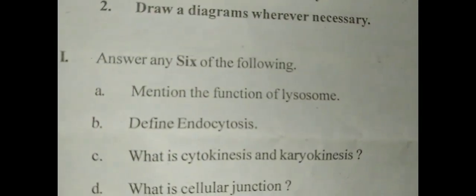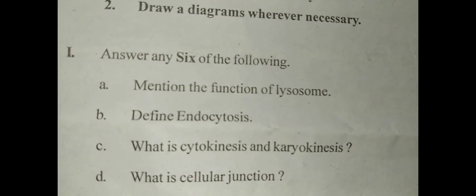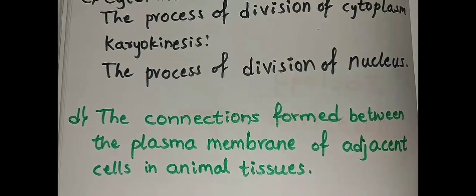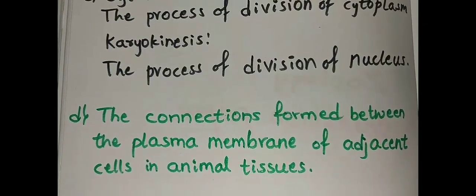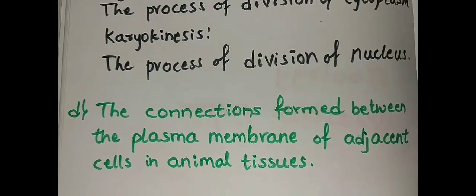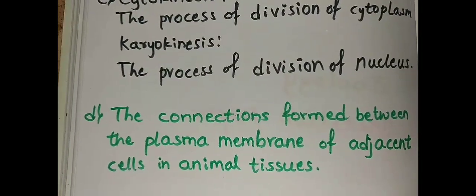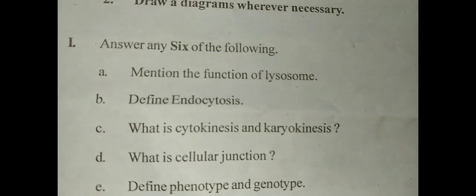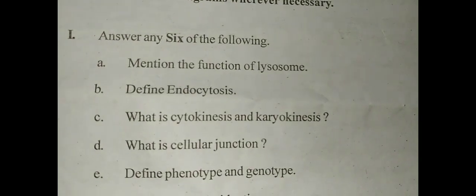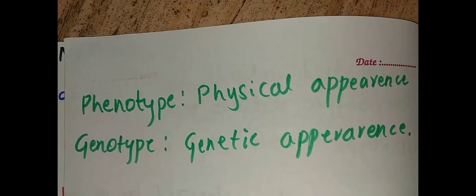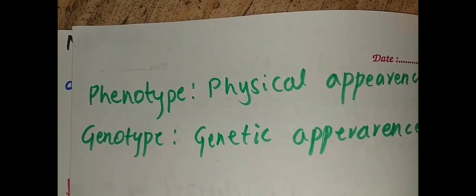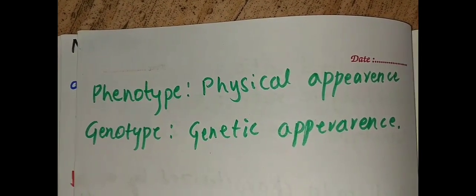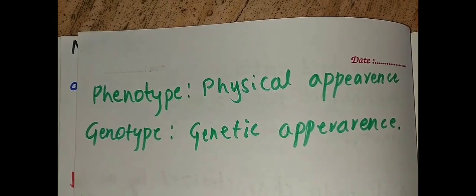Question number D, what is cellular junction? The connections formed between the plasma membrane of adjacent cells in animal tissues. This is called cellular junction. The next question is define phenotype and genotype. Phenotype refers to the physical appearance and the genotype refers to genetic appearance.